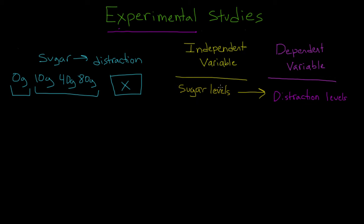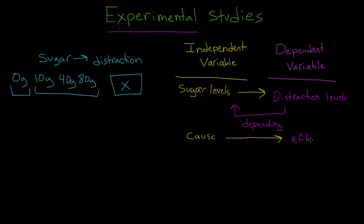There are a bunch of ways to remember the differences between independent and dependent variables. One way is to think of the dependent variable as depending on the independent variable. It's also helpful to think about the independent variable as the cause and the dependent variable as the effect, or maybe the outcome. So different levels of sugar are causing different levels of distraction.